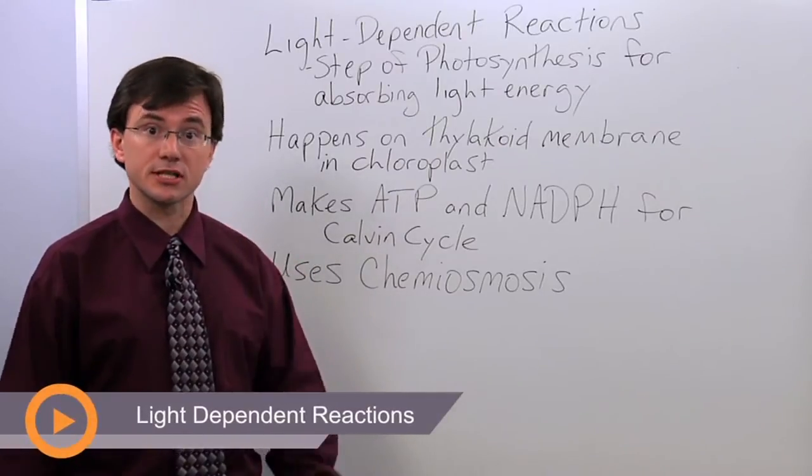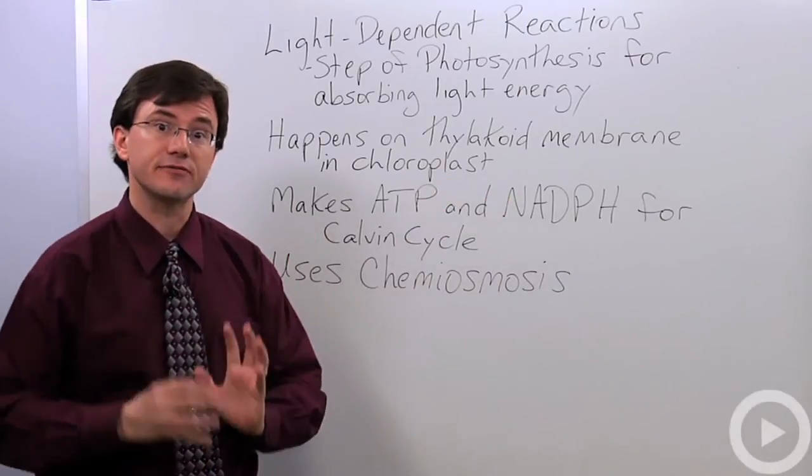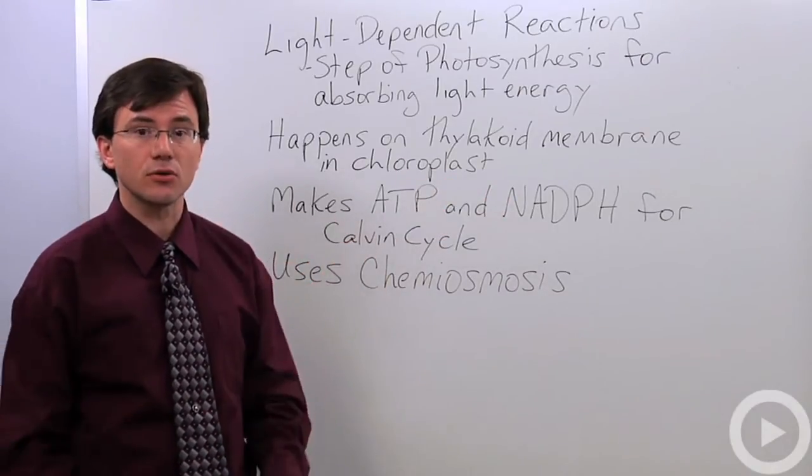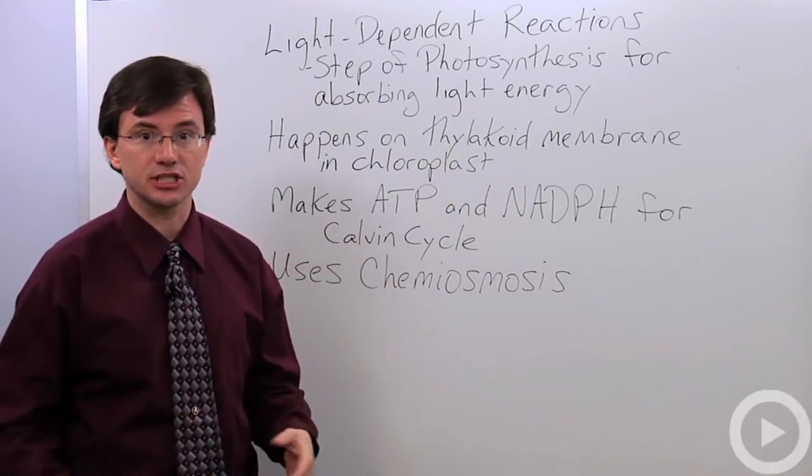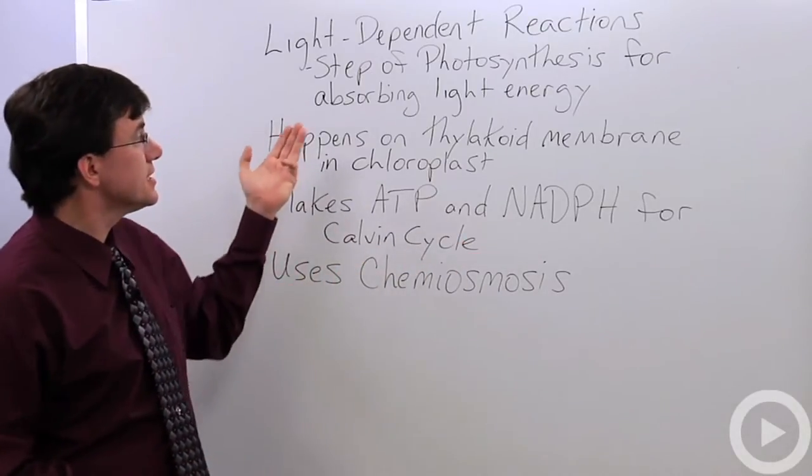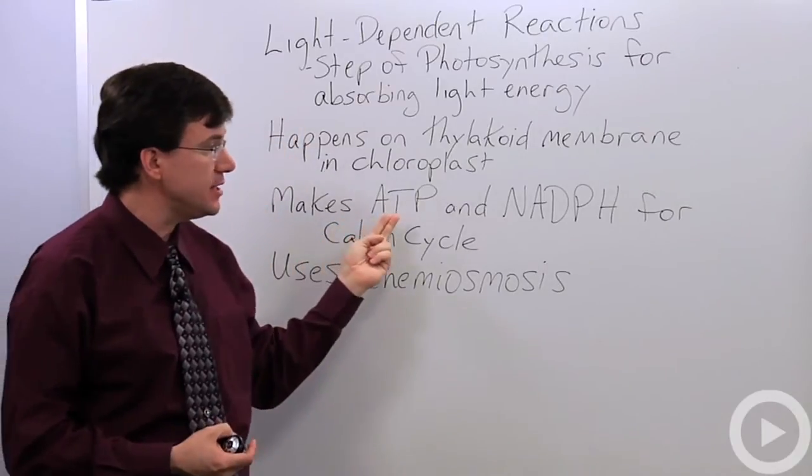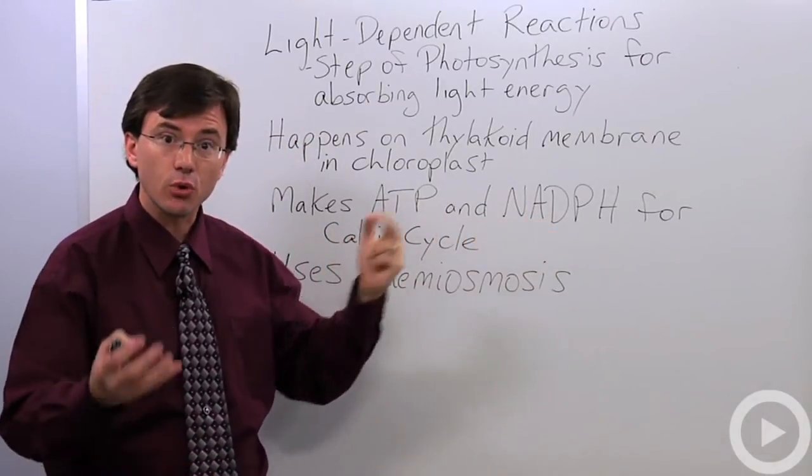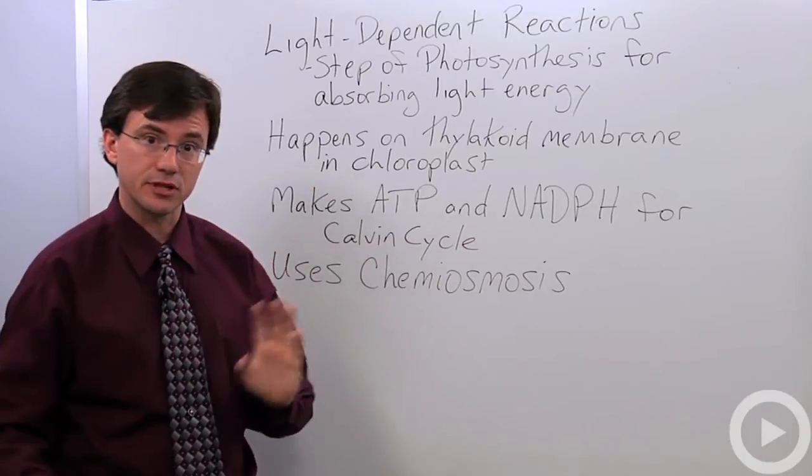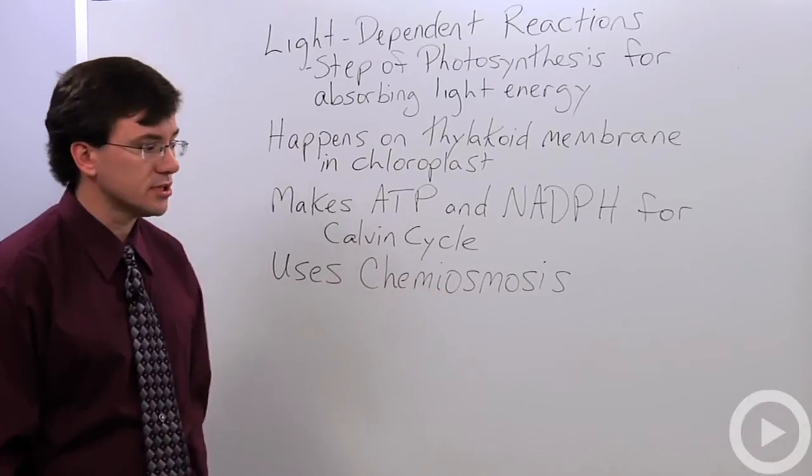Photosynthesis is a two-step process. The first step is the harvesting of energy from the sun, and that step is called the light-dependent reactions because it depends on light. It happens on the thylakoid membrane and creates the ATP and NADPH that is required for the last half of photosynthesis, the Calvin cycle, to occur. And it does it through a process known as chemiosmosis.